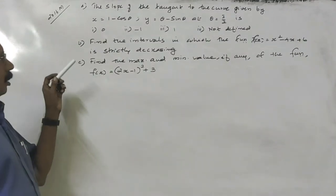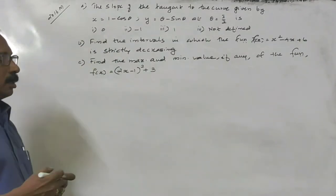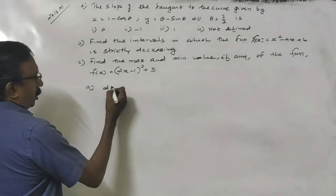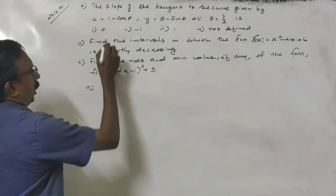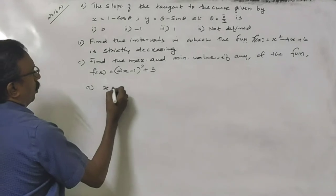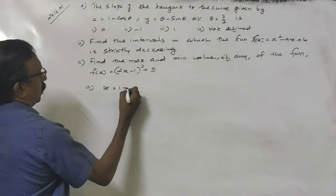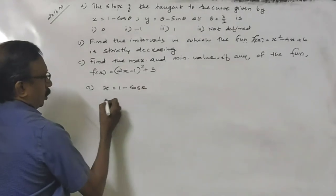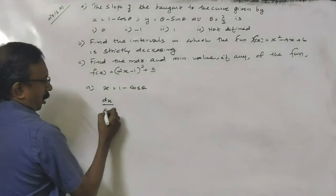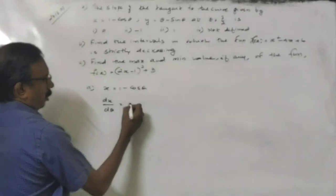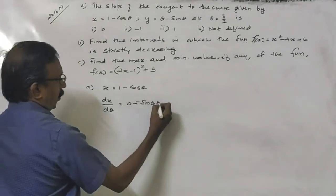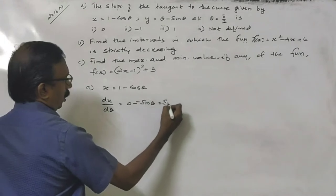First, we have to find the derivative of this function. So, to find dy/dx, since x equal to 1 minus cosθ, dx/dθ is a parametric function, giving 0 minus (minus sinθ), which is sinθ.